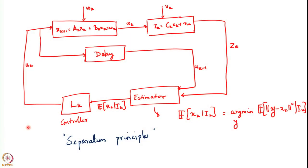The reason we started looking at the Kalman filter and more generally filtering problems was because we had come to the point where we were studying the linear quadratic problem with partial state information, and there we found that the optimal controller is a linear function of the estimate of the state. This estimate is the best estimate given the information. While the controller Lk could be computed recursively using the Riccati equations, how to compute this estimate remained open. The way to recursively compute it was through a filter, and specifically the Kalman filter when the noise was Gaussian.